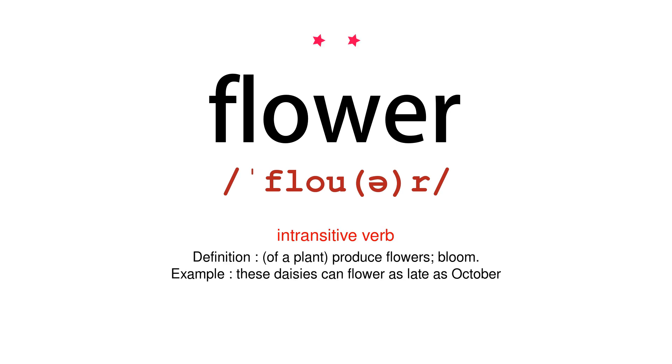Intransitive verb. Definition: of a plant, produce flowers; bloom. Example: these daisies can flower as late as October.